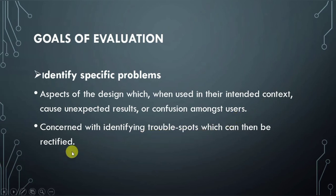The goals of evaluation are: first, to test the system against user requirements; second, to evaluate the system design after each stage to identify interface problems; and third, after each stage, to ensure there are no problems going forward. Finally, we learn the interface and identify specific problems and then solve them. If you found this video helpful, please like, subscribe, and share. Thank you.